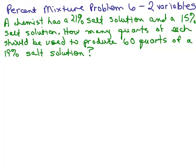So what do we have? We have a chemist that has a 21% salt solution and a 15% salt solution. How many quarts of each should be used to produce 60 quarts of a 19% salt solution?